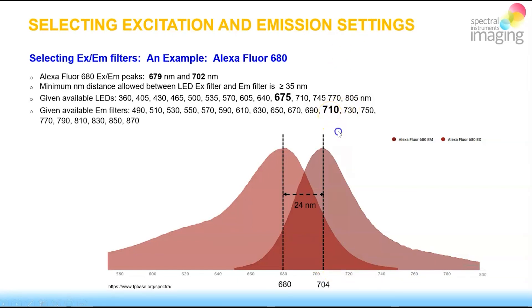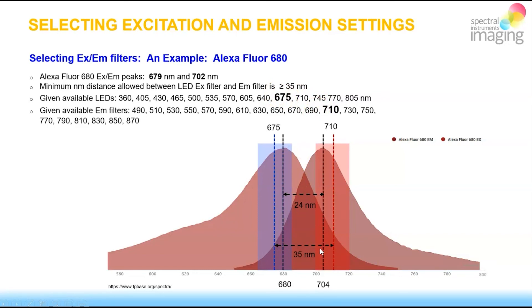There is a distance of 35 nanometers between the center point of this excitation and emission filter pair, and they both neatly capture a good fraction of the absorption and emission spectra for the Alexa Fluor 680 probe. In summary, this is the process — in general and here specifically — for how one selects excitation and emission filter pairs when conducting standard fluorescent image captures in an SI imaging system. Here's to great imaging.